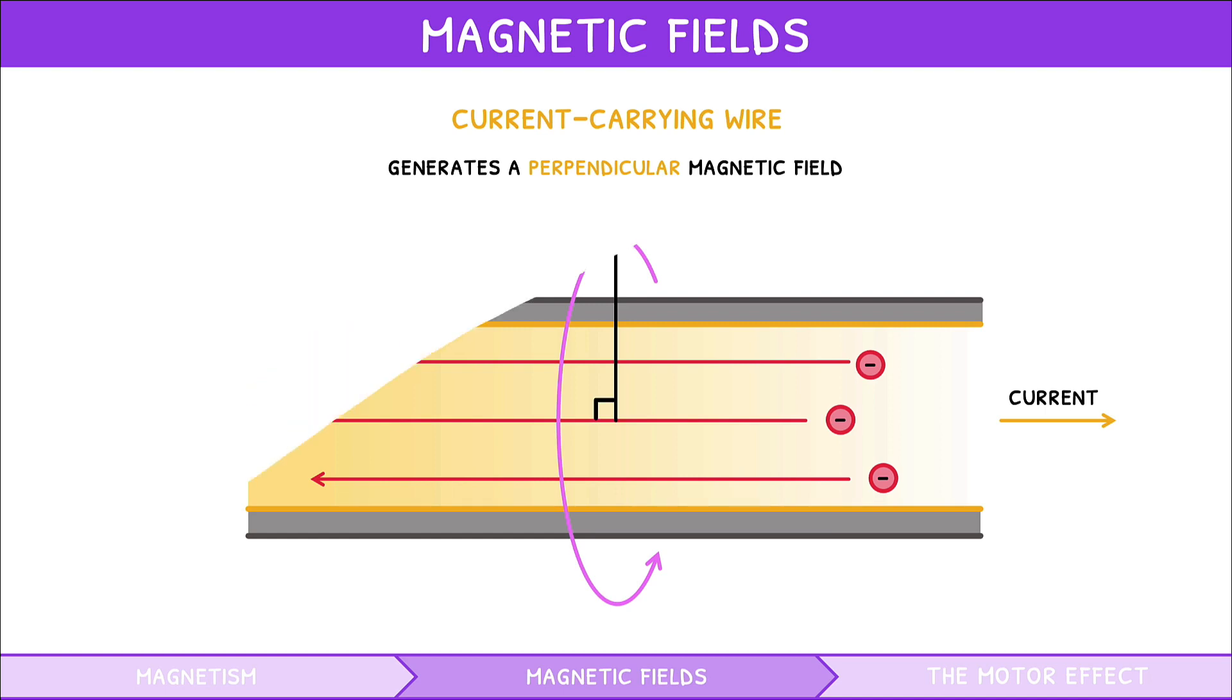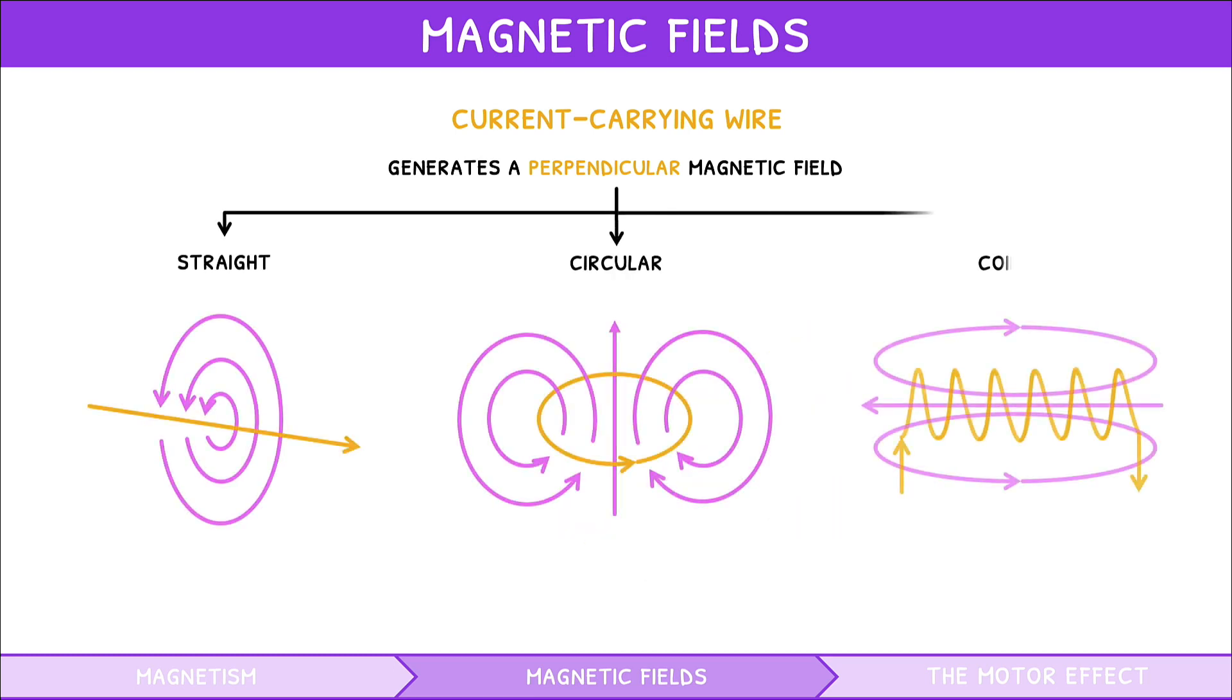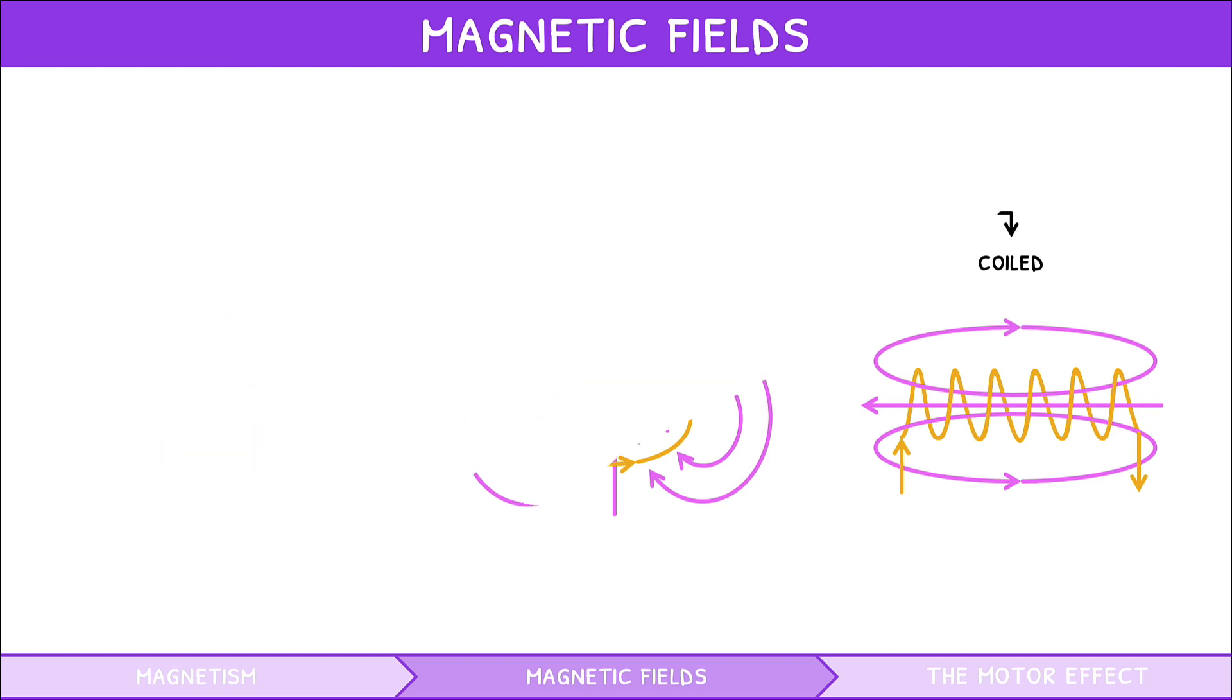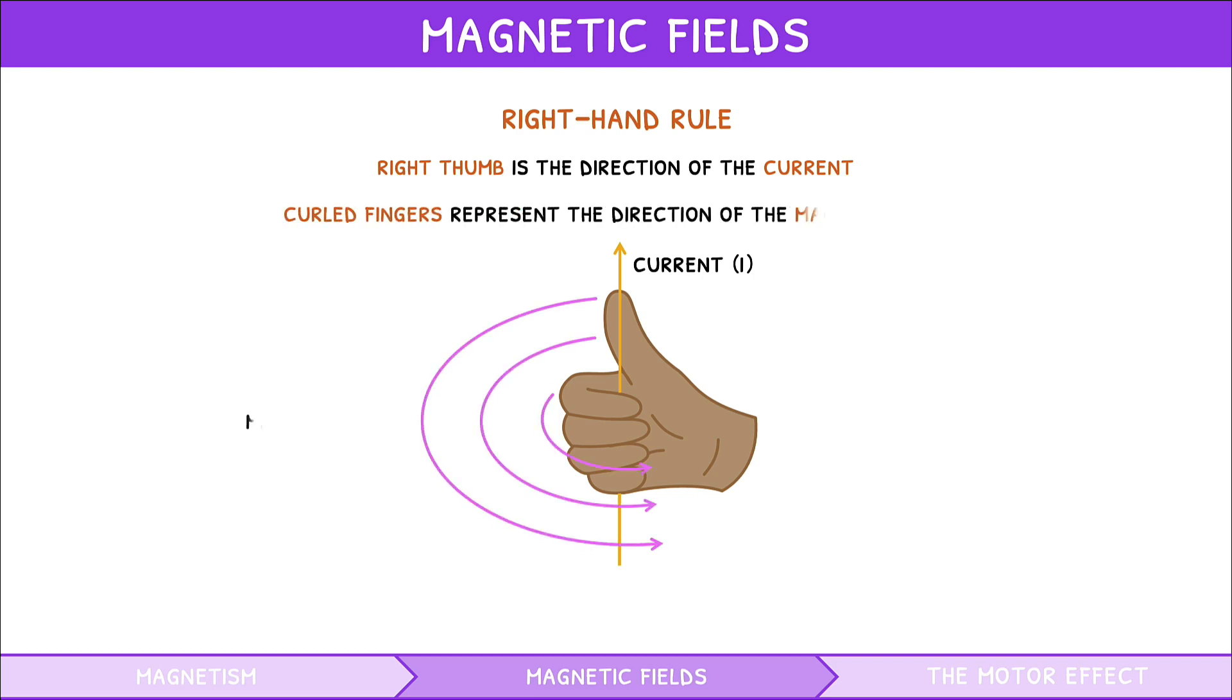You need to know the magnetic fields for three wire shapes: straight, circular, and coiled, known as solenoid. If you ever forget which direction the magnetic field travels in, use the right-hand grip rule. For this, align your right thumb with the direction of the current, then curl your fingers which represent the direction of the magnetic field. Remember though, if there is no current, there is no magnetic field.